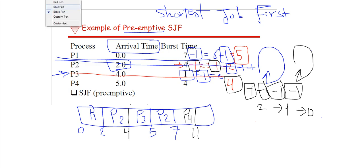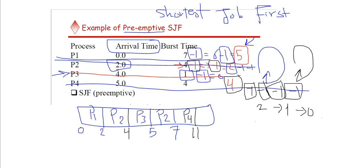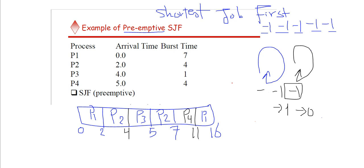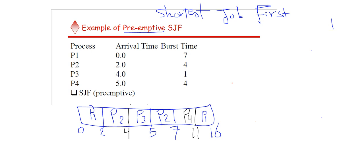The last remaining process is P1 with 5 seconds left. No other processes to compare, so it runs to completion: minus one five times to reach zero. P1 finishes at t=16. You can notice that the process with the largest burst time always finishes last.